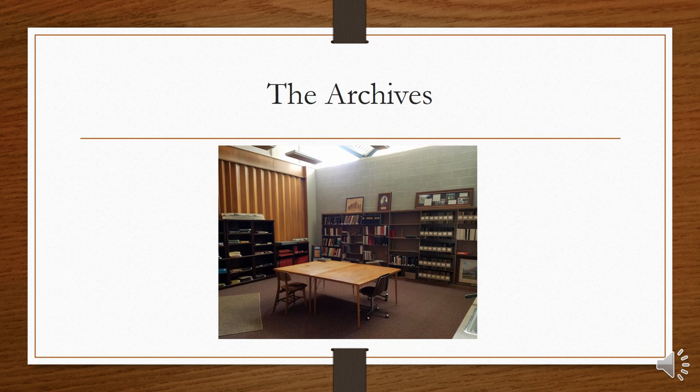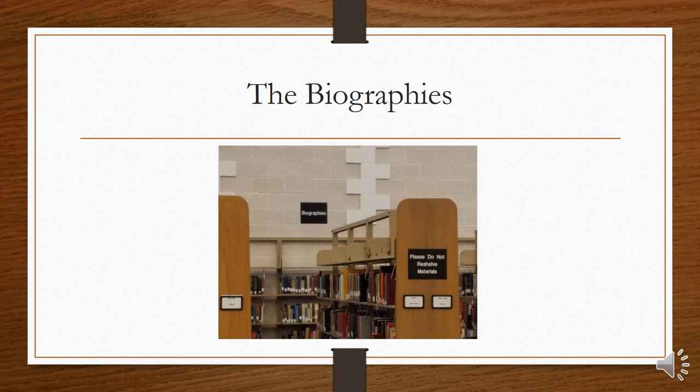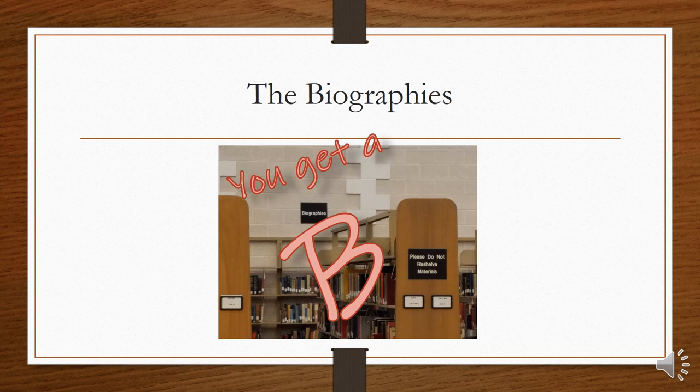We have a few other features in the library. Upstairs is an archives with Oklahoma history books and unpublished manuscripts related to the university. We also have a large biography collection. You might have noticed that biographies fall in the 900s in the Dewey system, but here we have them separated out in their own section, so they will have a B instead of a Dewey number. If you find a book in the catalog marked with the letter B instead of a number, that's a biography.